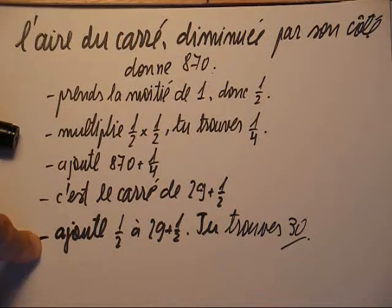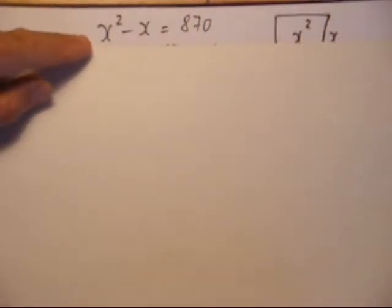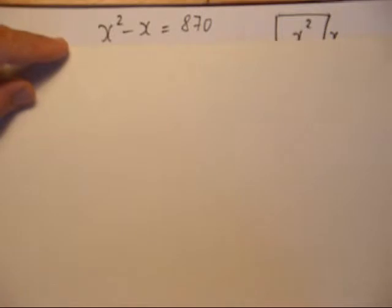Et maintenant la dernière version, tout à fait contemporaine. Si je note par x le côté du carré, on obtient x carré moins x égale 870, x carré étant l'aire du carré.